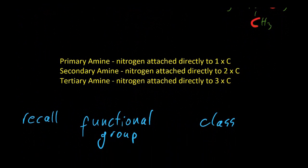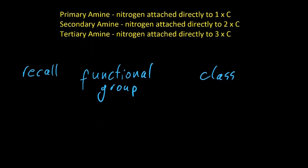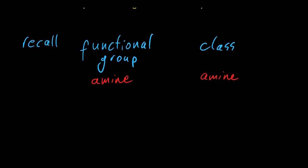So what's the rule? Primary amine, nitrogen attached to one carbon. Secondary, it's two. Tertiary, it's three. And just quickly recall, the functional group and the class is the same word, amines. And that's how you draw out the functional group.